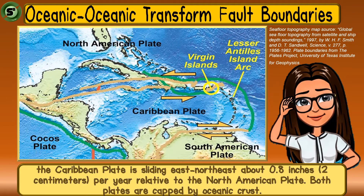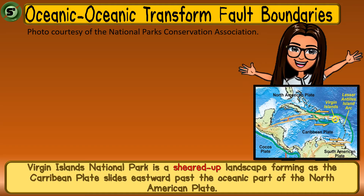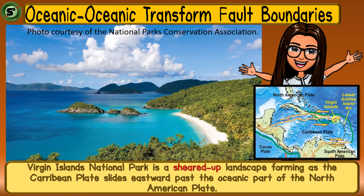This map shows an example of Oceanic-Oceanic transform fault boundaries. The Caribbean plate is sliding east-northwest to the North American plate. The two plates are capped by oceanic crust. The plates move around 0.8 inches or 2 centimeters per year. This is the result of the shearing plates of Caribbean and North America — the Virgin Islands. This Virgin Island National Park is a sheared-up landscape having a number of displaced rocks.